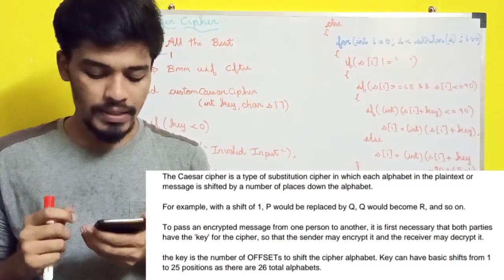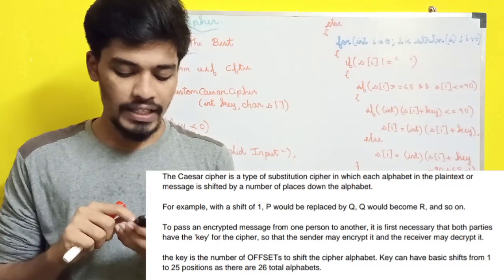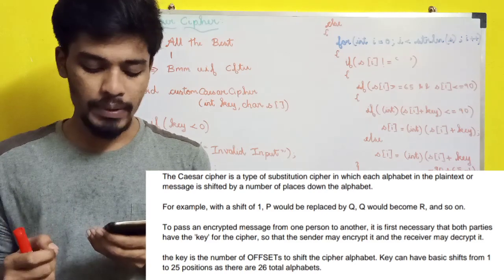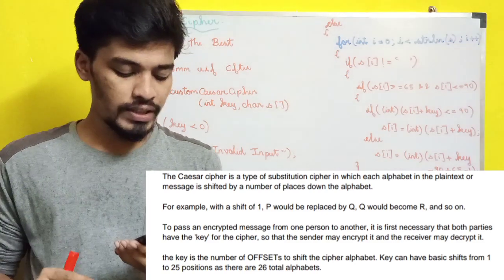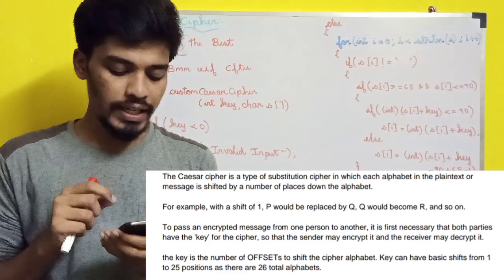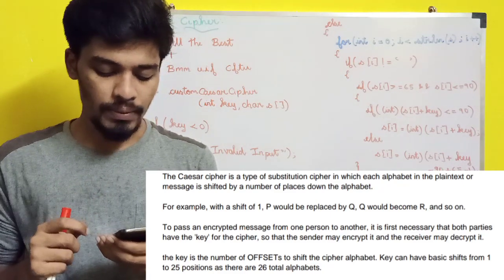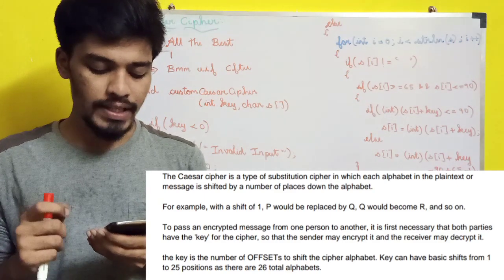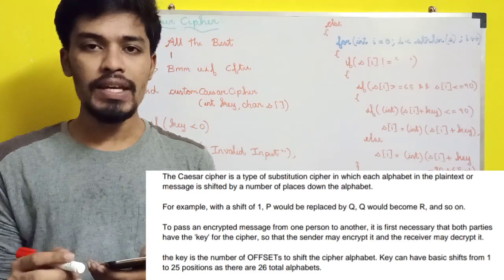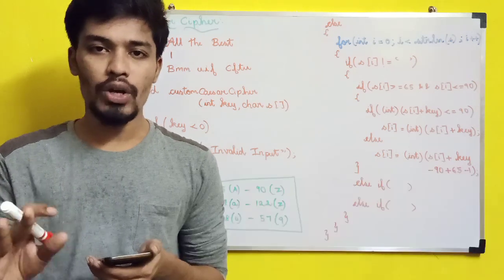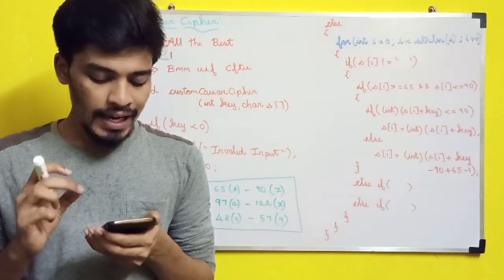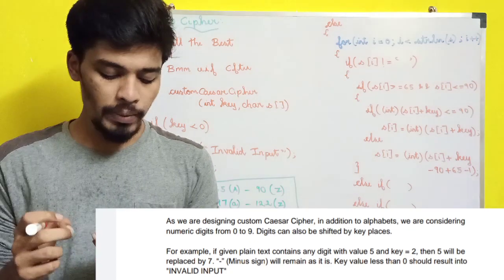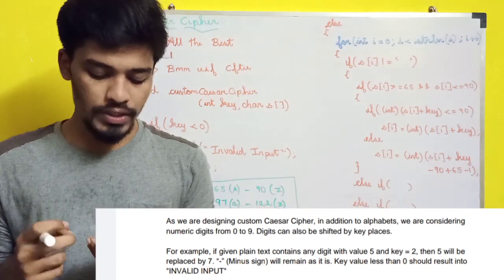To pass an encrypted message from one person to another, it is first necessary that both parties have the key for the cipher, so that the sender may encrypt and the receiver may decrypt. The key is the number of offsets to shift the cipher alphabet. Key can have basic shifts from 1 to 25 positions as there are 26 total alphabets. And as we are designing a custom Caesar cipher, in addition to alphabets we are also considering numeric digits from 0 to 9. Digits can also be shifted by key places.